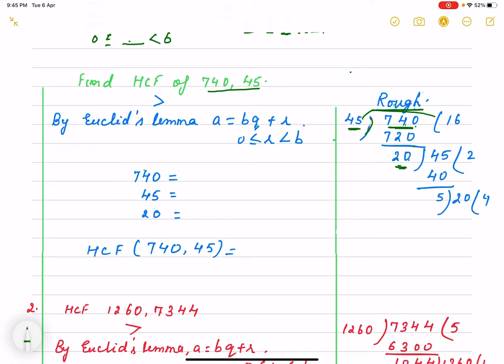Now, this number remainder will become divisor and the first divisor will become dividend. So, 45 will come here. Now, we know 22, 40.